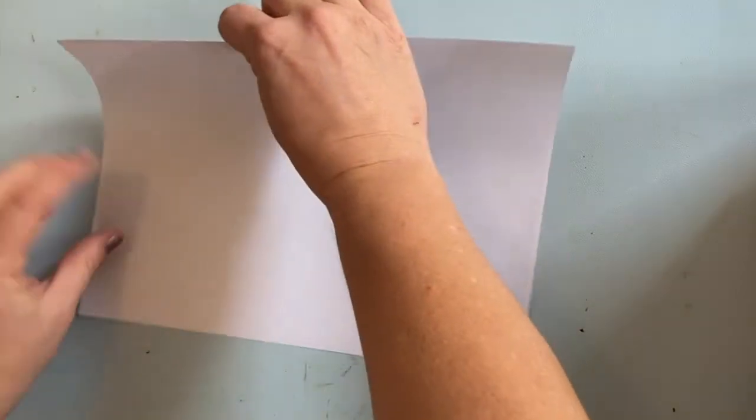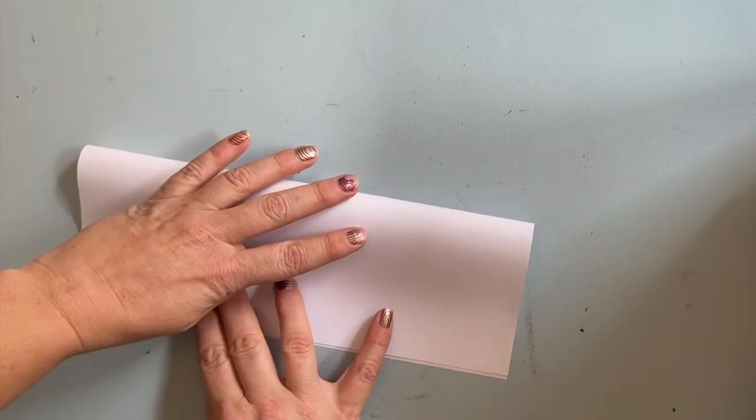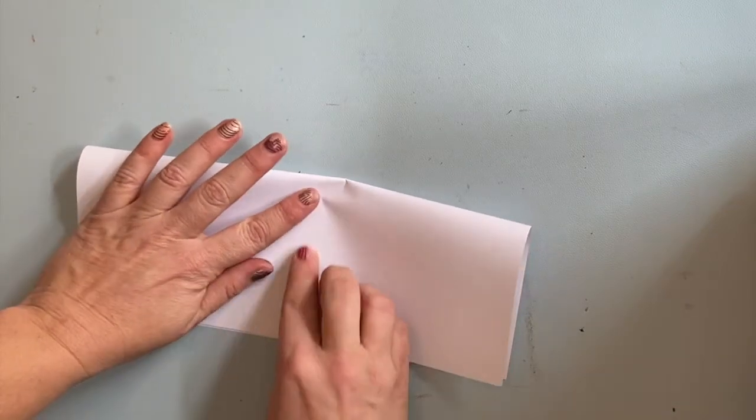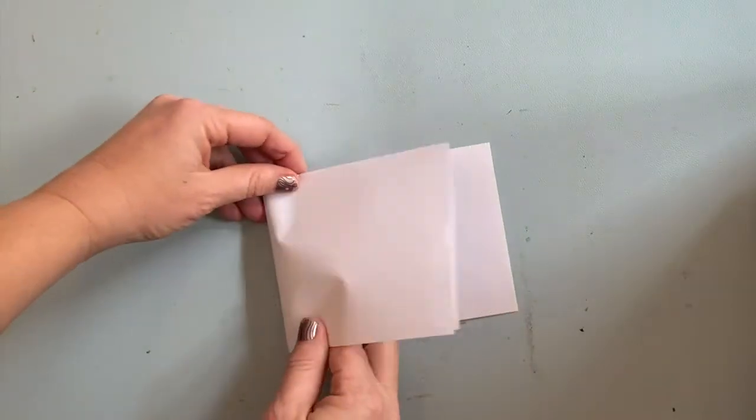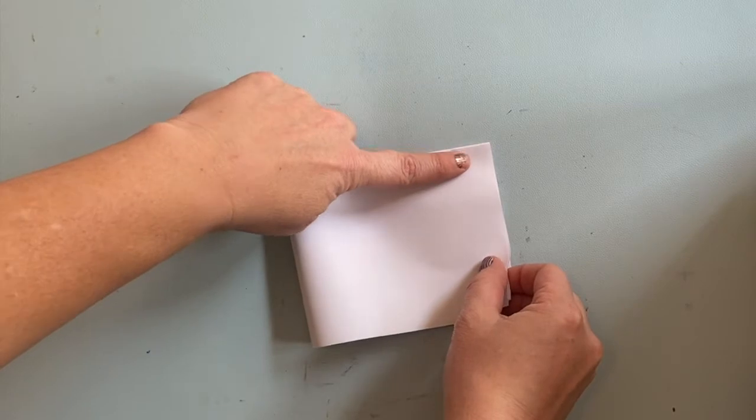Here's what you need: a pair of scissors and a normal piece of paper. Fold your paper in half lengthwise—some people call this hot dog style. It should be long. Next, fold it in half this way.